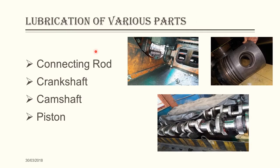The lube oil from the lube oil sump is sent to the crankshaft via S-pipe and then to the connecting rod, camshaft and piston. The connecting rod has a fine-drilled hole from the big end to the small end for transporting oil, for lubrication at the small end bearing and piston pin, and for cooling of the piston.